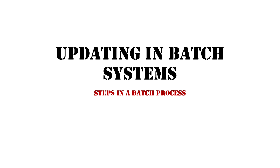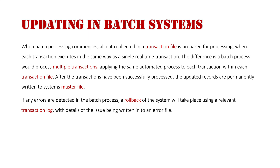In a batch process, when the batch processor commences, all data collected in a transaction file is prepared for processing. Each transaction executes in the same way as a single real-time transaction, but a batch process includes multiple transactions stored in transaction files. The same automated process is applied to each transaction, and after all transactions have been successfully processed, the updated records are permanently written into the system's master file — the main database used by the system.